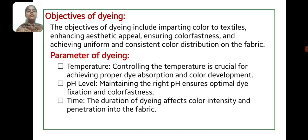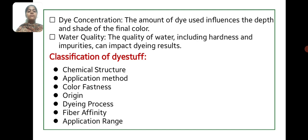Parameters of dyeing: Temperature — controlling the temperature is crucial for achieving proper dye absorption and color development. pH level — maintaining the right pH ensures optimal dye fixation and color fastness. Time — the duration of dyeing affects color intensity and penetration in the fabric. Dye concentration — the amount of dye used influences the depth and shade of the final color. Water quality — hardness and impurities in water can impact the dyeing result.